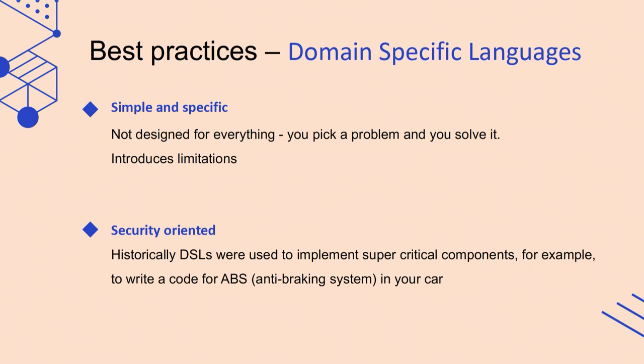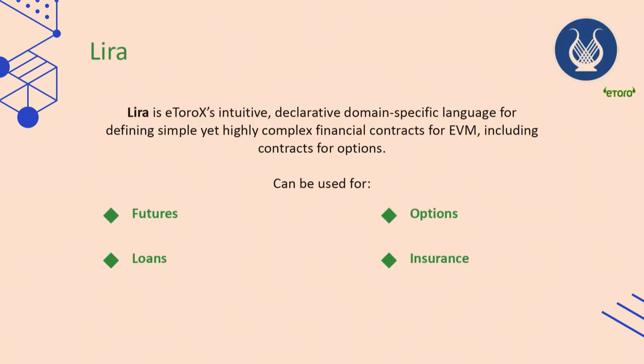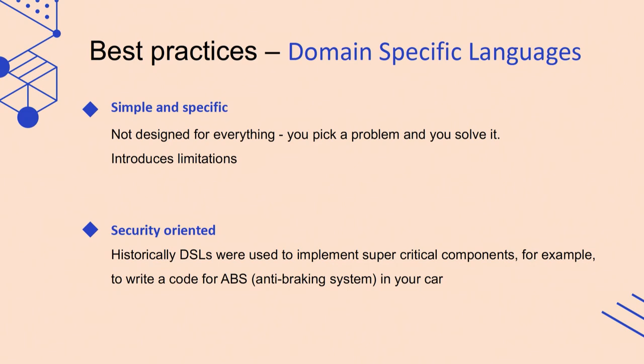DSLs are usually security-oriented. Historically, DSLs were used to implement supercritical components, for example, to write code for anti-braking systems in cars or for supply chain. There are also DSLs for some banks and financial operations because they're security-oriented. Before we go further, I want to give you one intuition about DSL. Just imagine you want to build a website and you do not have HTML and CSS. You have only control over every pixel on the user's screen, and you can only set the color of that pixel. Is that a good way to make a website? I don't think so. That's what we're doing right now with smart contracts and DeFi—we're trying to set the color for every pixel on the user's screen.